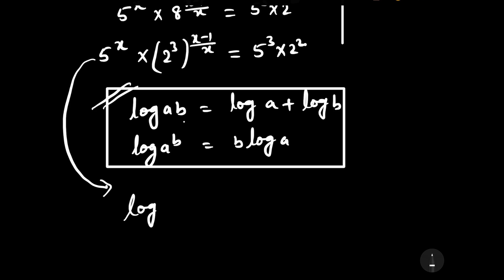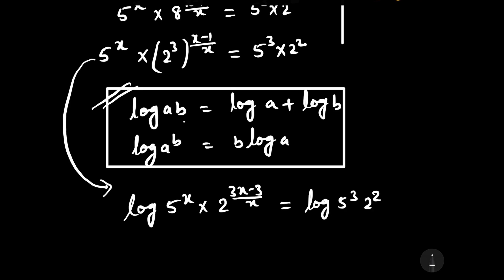Taking log on both sides, we have log of 5 to the power x into 2 to the power (3x minus 3) upon x, equal to log of 5 to the power 3 into 2 to the power 2. Now consider 5 to the power x as one term and 2 to the power (3x minus 3) upon x as another term.